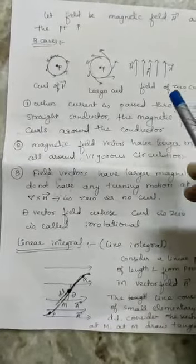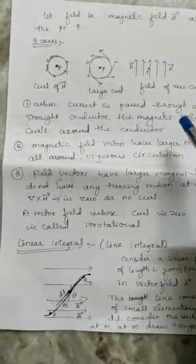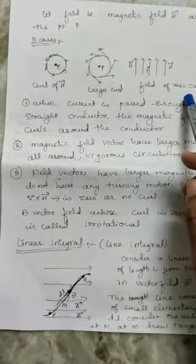They are not circulating, not turning around, so it is represented as zero curl.